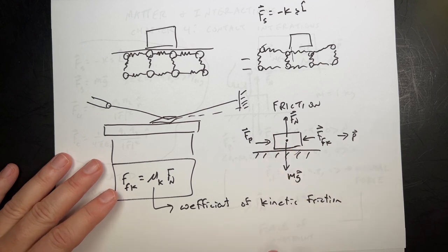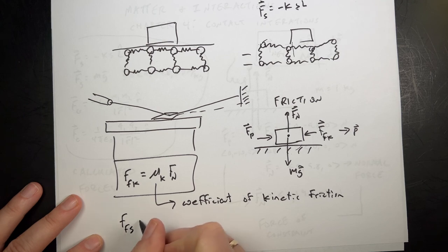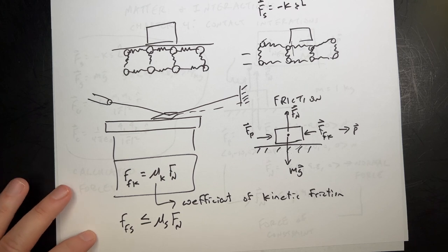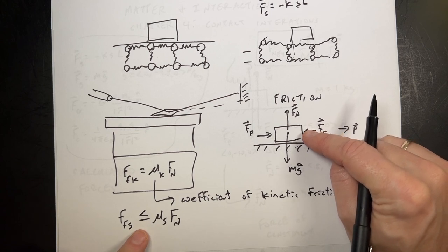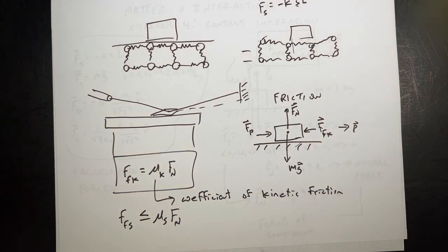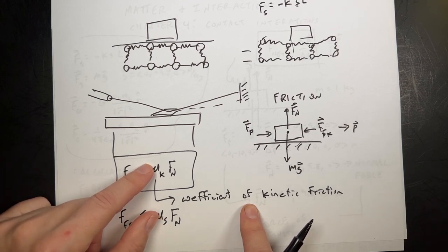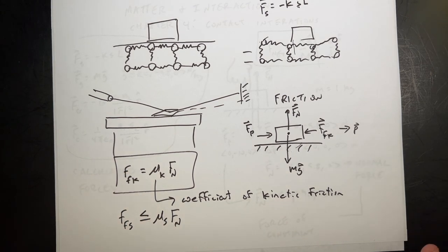If the block is not moving, we have a different frictional force — static friction: F_fs ≤ μ_s × F_n, where μ_s is usually between 0 and 1. These are magnitudes. The static friction force provides whatever force it needs to prevent the two surfaces from sliding. Both coefficients depend on the types of surfaces interacting — wood with steel, rubber with concrete, Teflon with Velcro — these are experimental values.